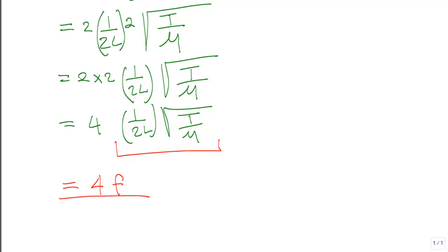And in essence, what this is saying is that if we have a string that is vibrating with a fundamental frequency of f, and we were to half the length of that string and multiply the tension in the string T by 4, then overall we are just multiplying the fundamental frequency f by 4.